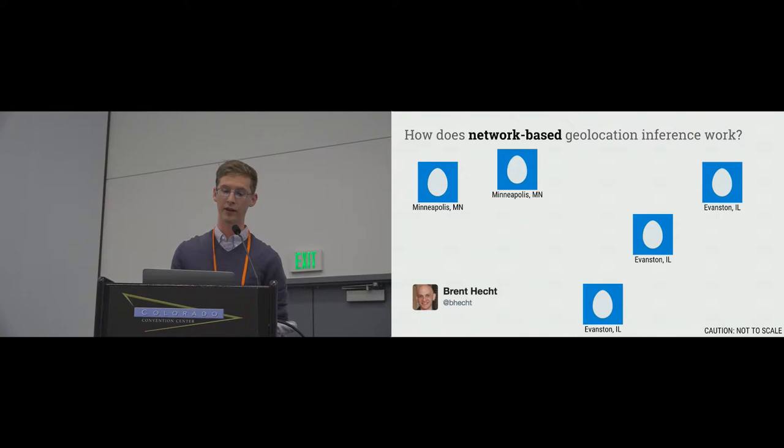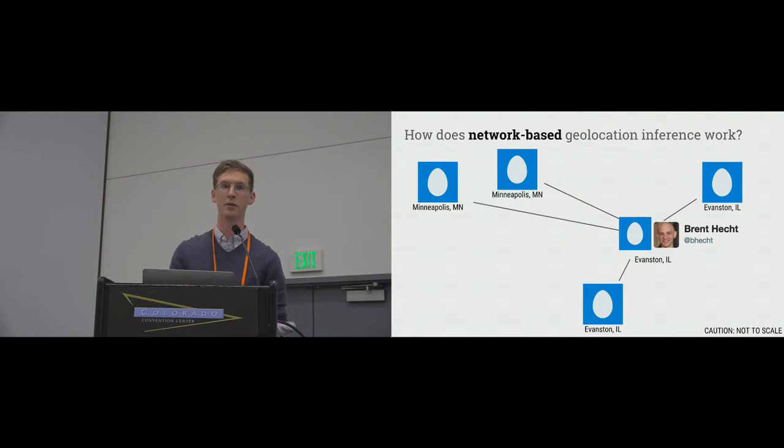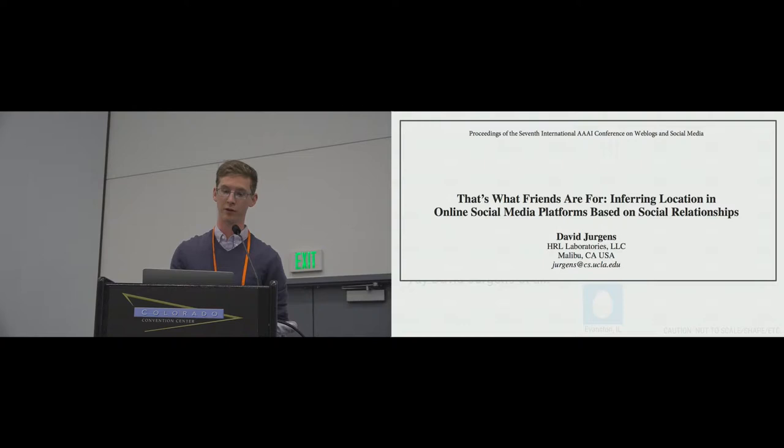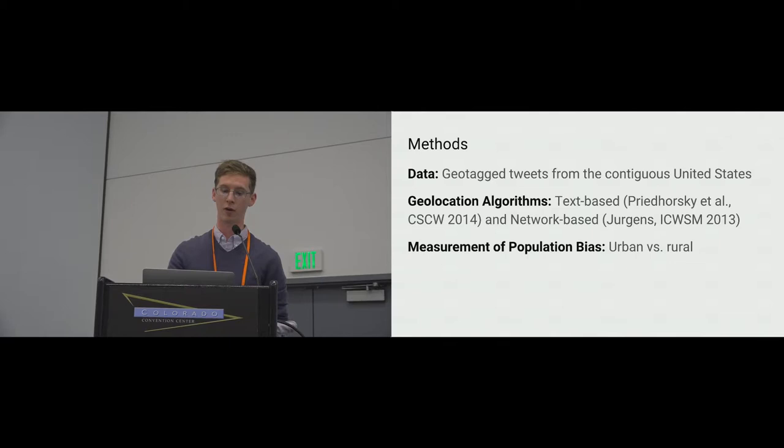The other main approach is network-based. In this approach, you ignore the content of the tweet and instead ask where the user's friends are located. In our example, Brent has five friends with known locations, and then the algorithm locates him as the median of these locations, with some constraints. We built on an open source implementation of this developed by David Juergens — a big thank you to them as well.